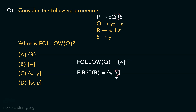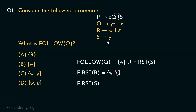Due to this Epsilon, if we derive Epsilon from R, we are going to have S following Q. So with the terminal symbol W, we are going to union the first of S. Let's determine the first of S now. Observe the production rule of S: S can be rewritten as Y. That means the first of S will include the symbol Y. Therefore, finally the follow of Q will have the symbols W and Y.